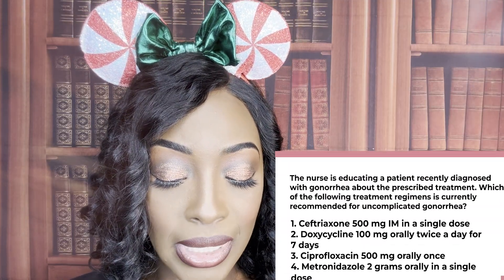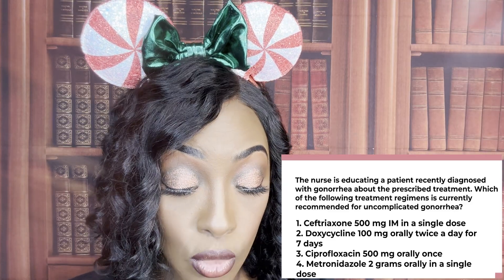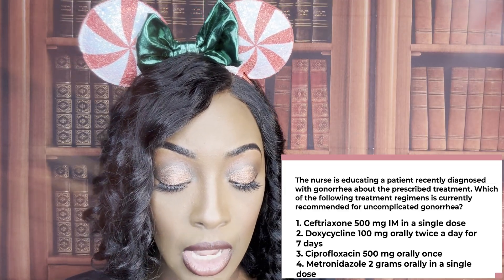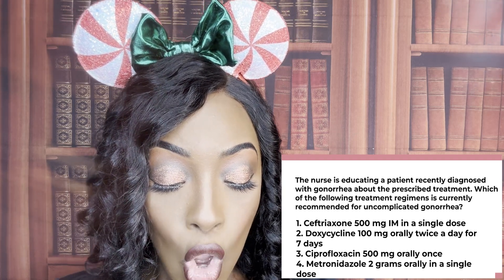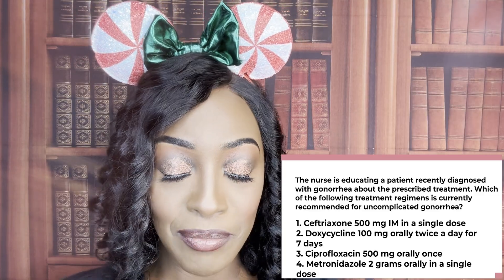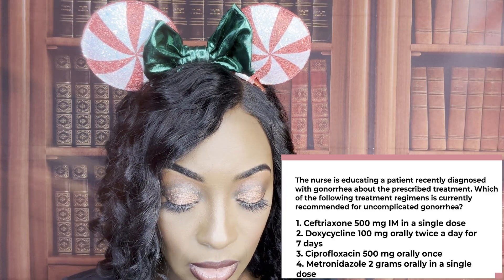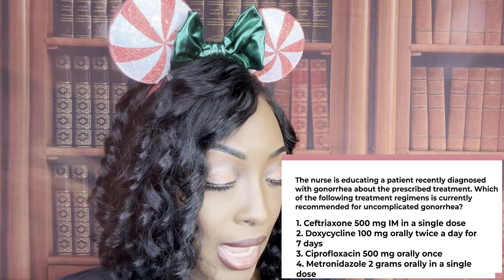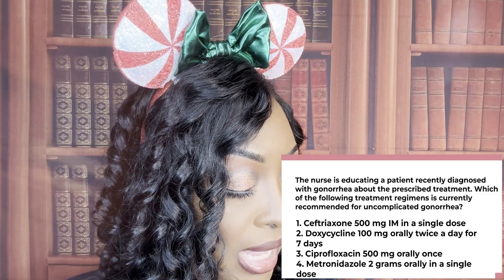The nurse is educating a patient recently diagnosed with gonorrhea about the prescribed treatment. Which of the following treatment regimens is currently recommended for uncomplicated gonorrhea? One: ceftriaxone, 500 milligrams IM in a single dose. Two: doxycycline, 100 milligrams orally twice a day for seven days. Three: ciprofloxacin, 500 milligrams orally once. Or four: Flagyl (metronidazole), two grams orally in a single dose. The correct answer is one — ceftriaxone, 500 milligrams IM in a single dose.